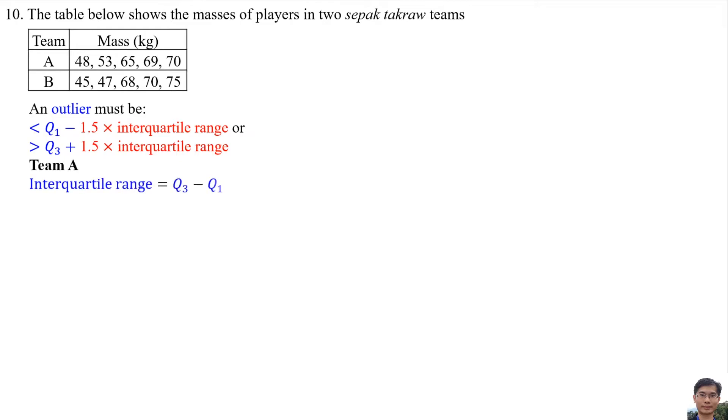Team A: The interquartile range is the third quartile minus first quartile. To find the third quartile and first quartile, we need to find the median first. Median is the center of the data. So the median for Team A and Team B is 65 and 68 respectively.